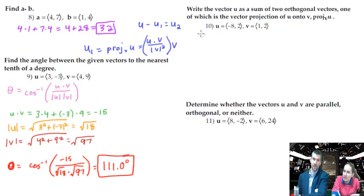So, we need to do u dot v. Let's do it. That's going to be negative eight times one, which is negative eight, plus two times two, which is four. So that's negative four. The magnitude of v, but we're squaring it, which means we don't need to put the square root. It's just one squared plus two squared, which is five.